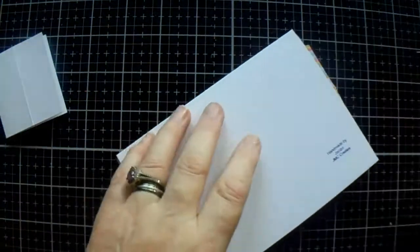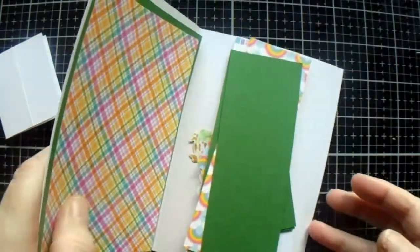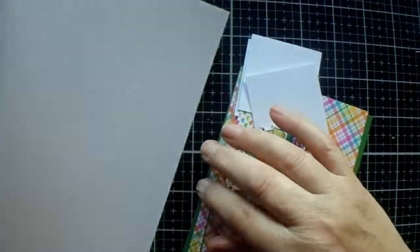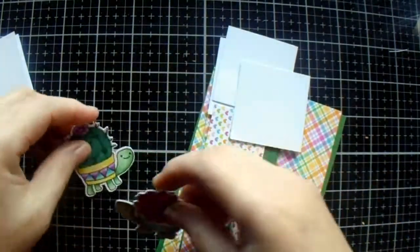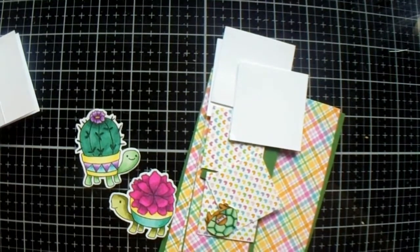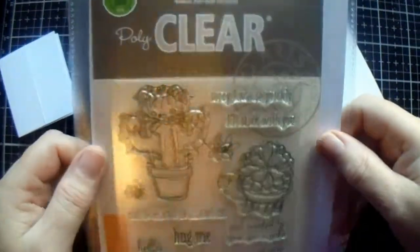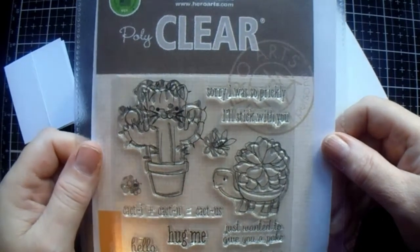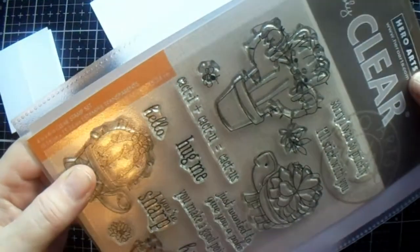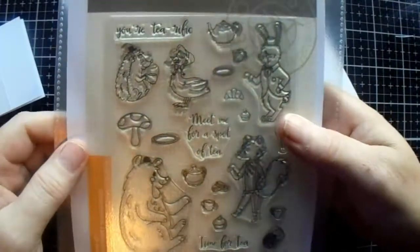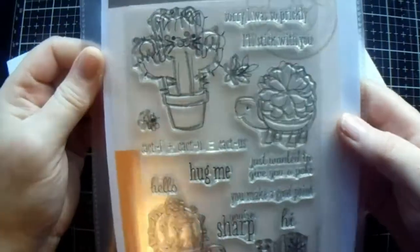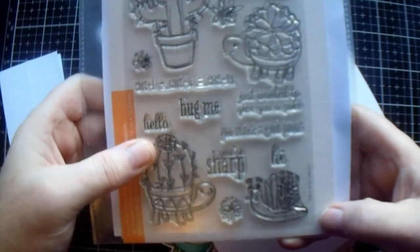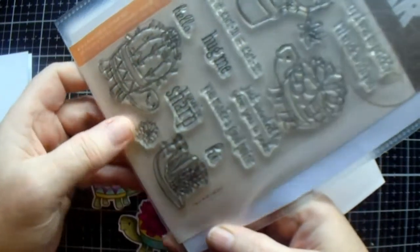For this one I am going to use a lot of stuff. I have no idea what it's called. It's a Hero Arts anyway, and it is lots of cactus. It just says Hero Arts CM267.